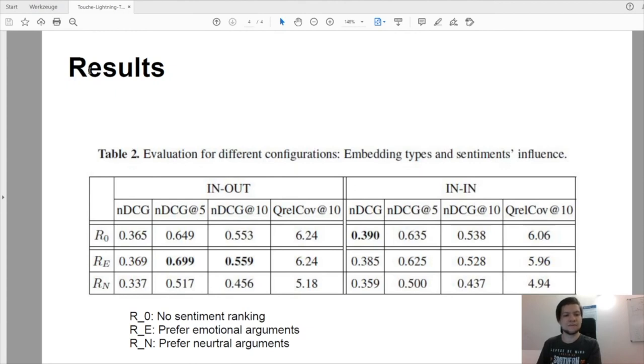So our final scores are overall somewhat mediocre. However, in the last row we see that preferring neutral arguments yields much worse scores. Correspondingly, preferring more emotional arguments improves the retrieval outcome. We can therefore conclude that including sentiment information can somewhat positively influence the relevance ranking for the argument retrieval task.